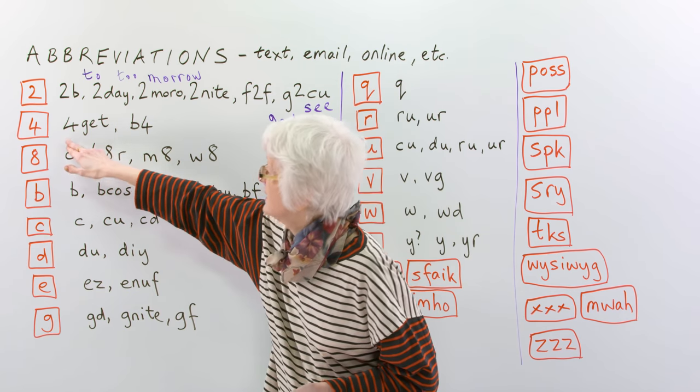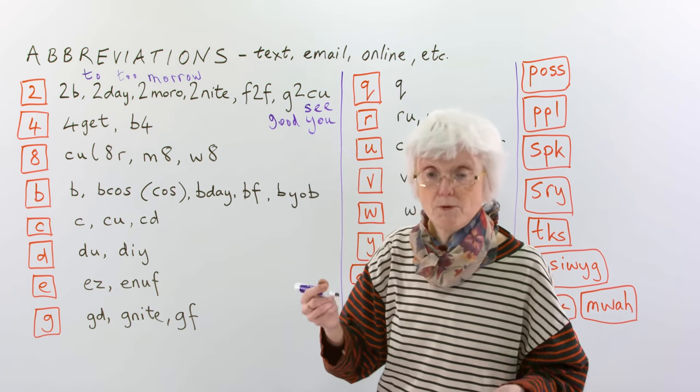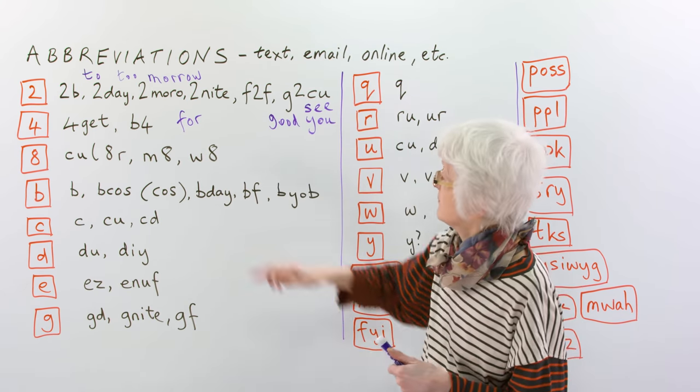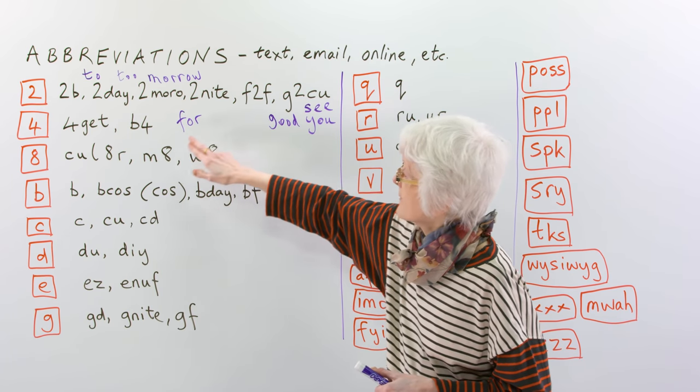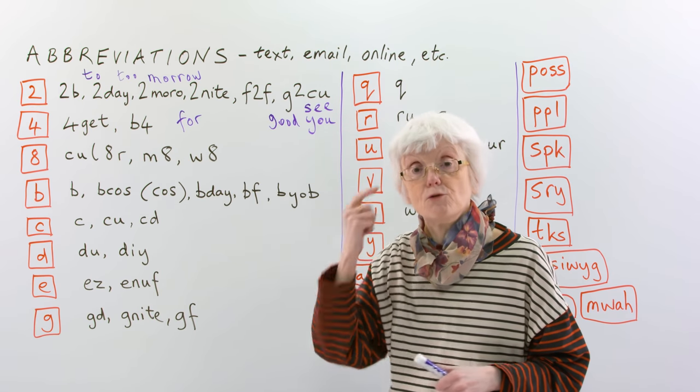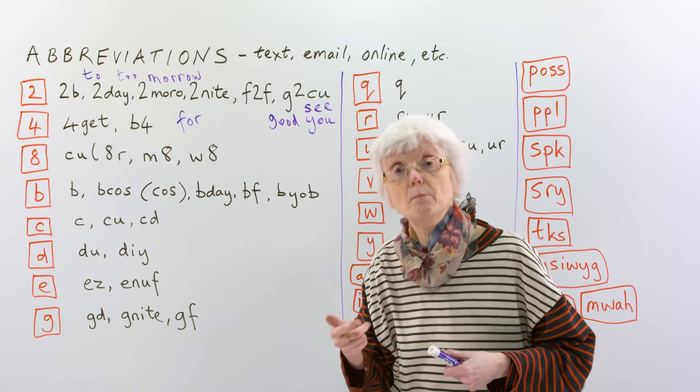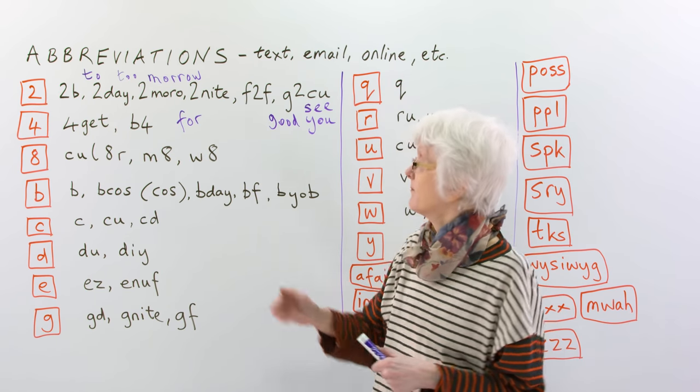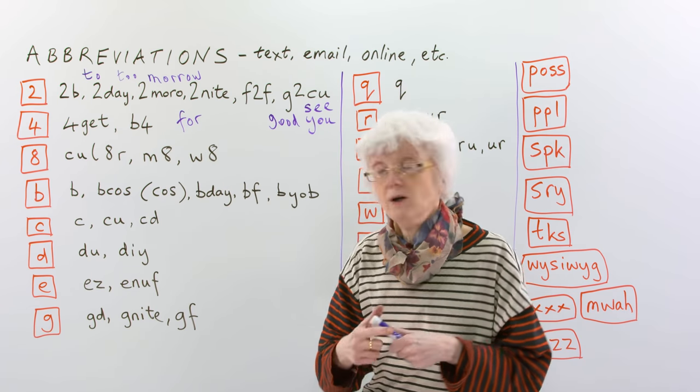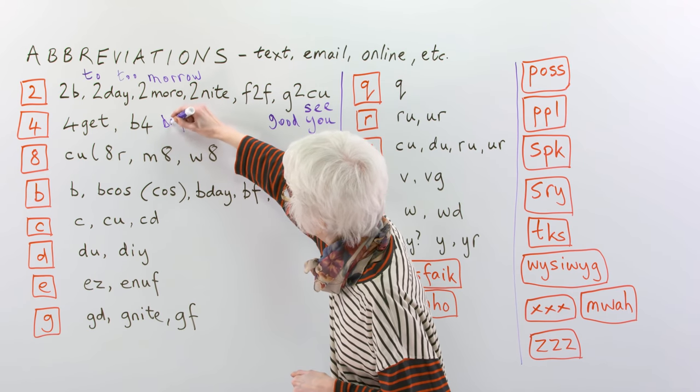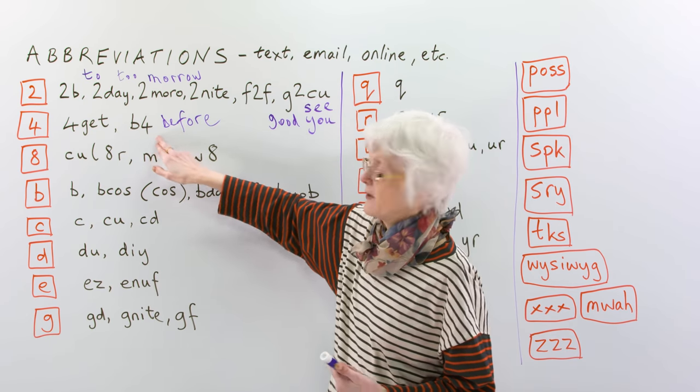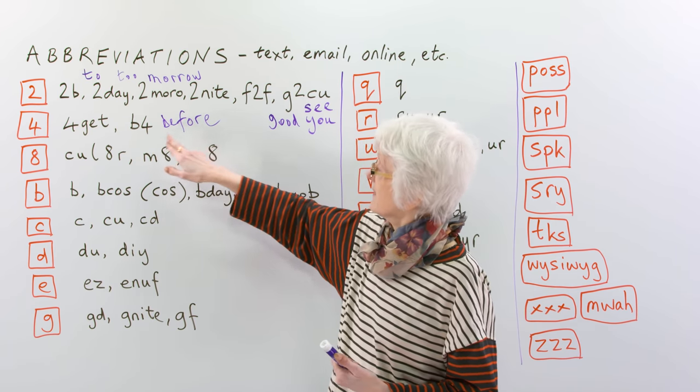Okay. Let's move on to four. For. So, again, for, the number for, can also look like that word. F-O-R. For. So, for-get. For-get. To forget something. When you don't remember, you forget. And this one, be-for. Before. Be-for. Not after, but before. So, that's another nice short one for a longer word.